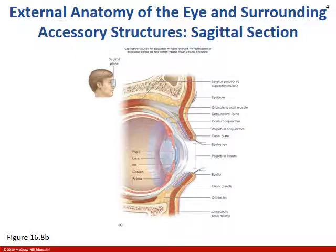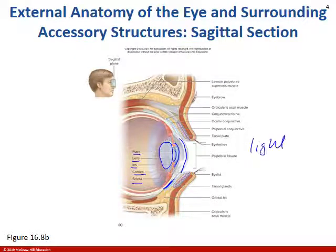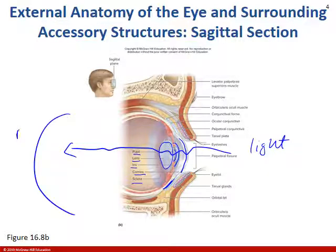From this image we can see the cornea, the white of the eye which is the sclera, the colored part of the eye which is the iris, the opening which is the pupil, and the disc which is the lens. What's going to happen is light will penetrate these structures, coming to the back of the eye or the retina. Basically we're going to turn a light message into an action potential.